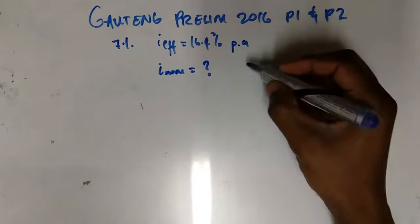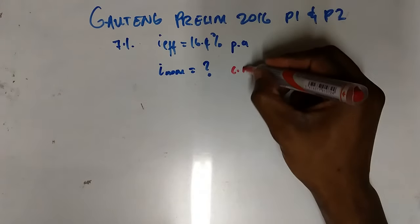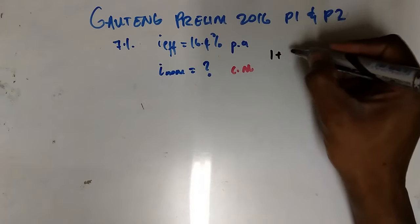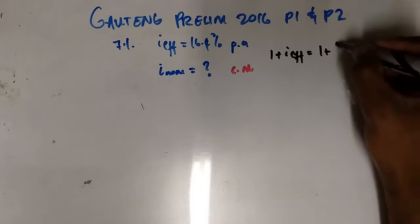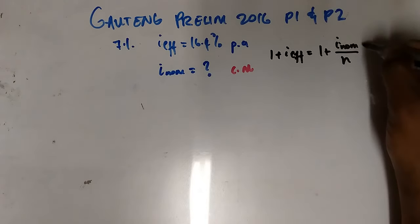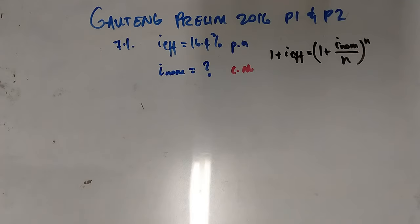i_nominal is the unknown, and we are told it is compounded monthly. The equation we have to use is: (1 + i_effective) = (1 + i_nominal / n)^n. This is the equation we're going to use to find i_nominal.